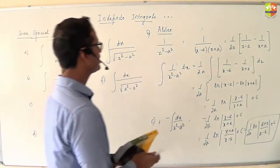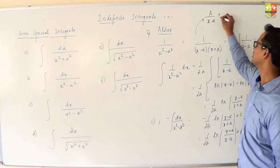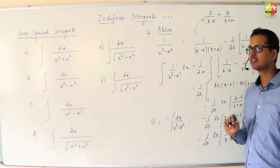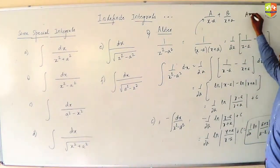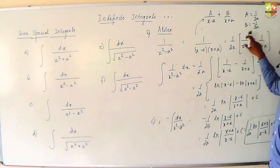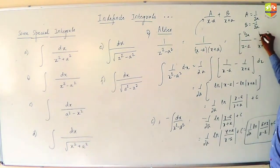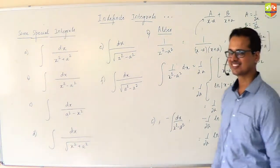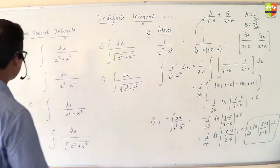Try writing this as a by x minus a plus b by x plus a. You have done partial fractions in 11th. Try to get a and b. Your a will come out to be 1 by 2a, b will come out to be minus 1 by 2a. So I directly use it over here. Instead of writing this, you can write it as 1 by 2a minus 1 by 2a. It's the same thing.